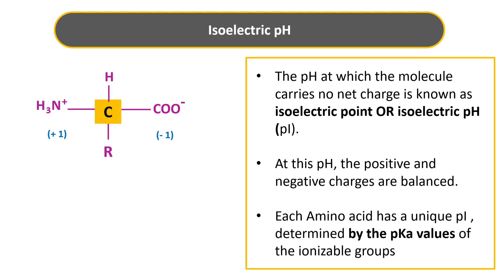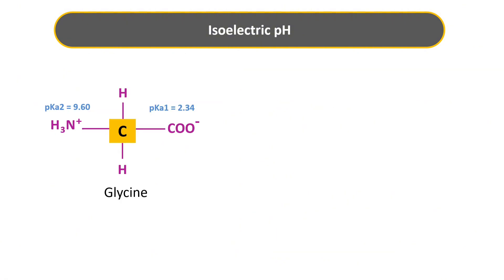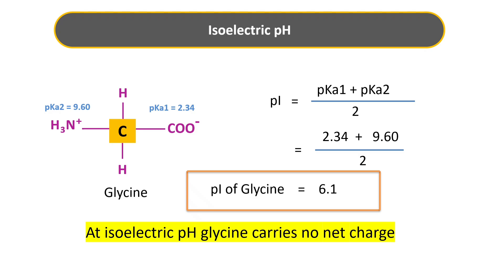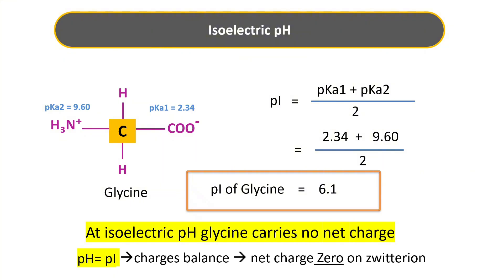Let's understand this with the example of glycine. The pKa of its carboxyl group is 2.34 and the pKa of its amino group is 9.60. Using the formula for isoelectric pH — averaging the two pKa values — the isoelectric pH of glycine is 6.1. This means at pH 6.1, glycine carries no net charge. When the pH of the environment is also 6.1, the net charge on the zwitterion of glycine will be zero.